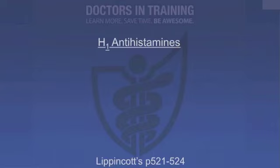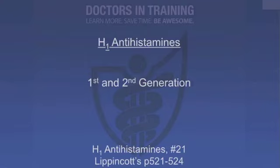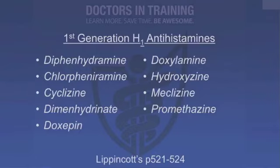So now let's talk about how we use drugs to block histamine receptors. First, the H1 antihistamines — very, very common medications used all the time, many over the counter. Most of the time when people say 'I took my antihistamine,' they're almost always referring to an H1 blocker, not an H2 blocker. H1 blockers are divided into first generation and second generation. First generation medications include diphenhydramine, chlorpheniramine, cyclizine, dimenhydrinate, doxepin, doxylamine, hydroxyzine, meclizine, and promethazine — though promethazine is sort of half an antihistamine, half something else.